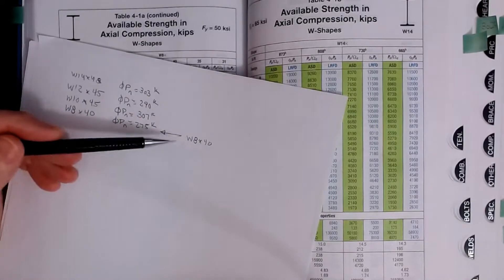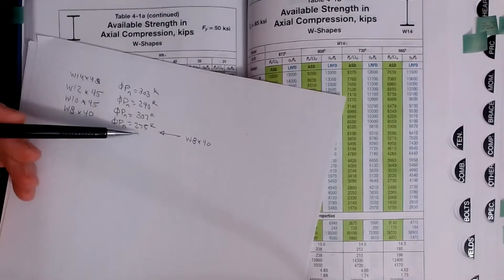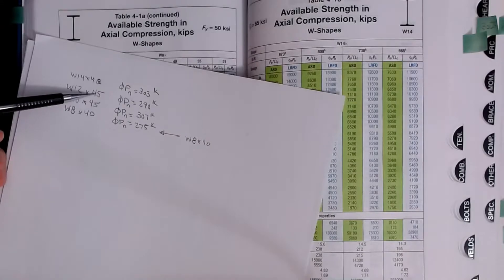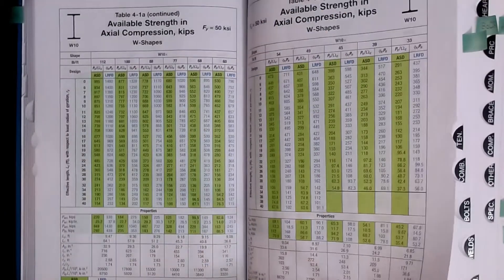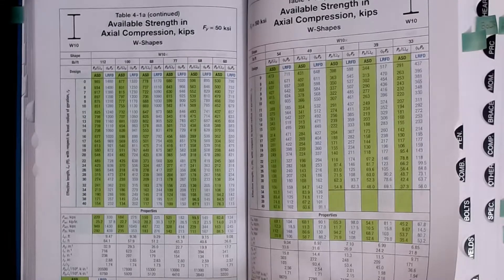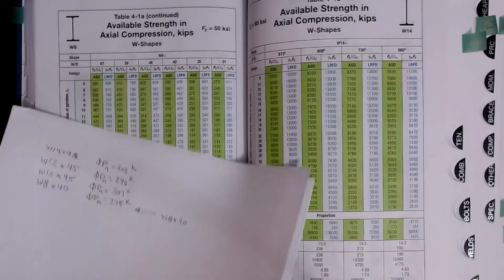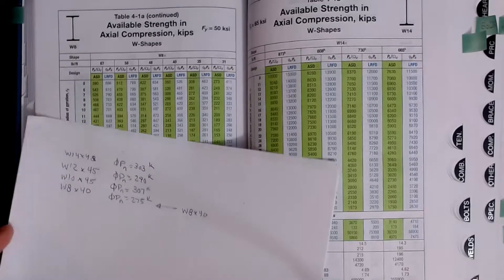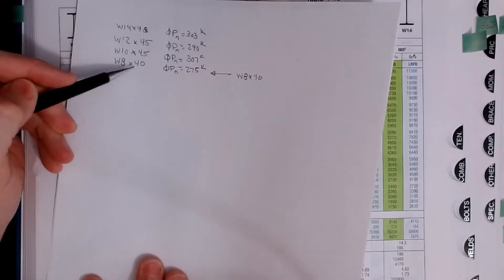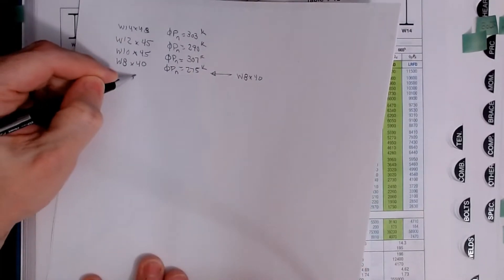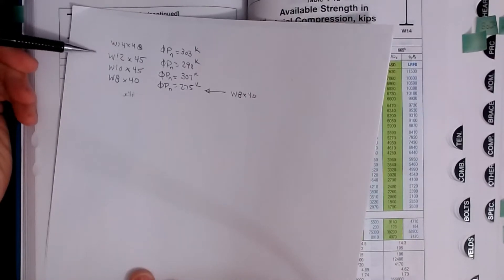So I might argue I don't like being that close to the number. This is engineering judgment and as long as you can justify your decision you're allowed to use a W8 by 40. If it were me I would probably bump up to the next lightest size which would be a W12 by 45. The next size up for an 8 is an 8 by 48 which would be heavier so we're going to leave the 8s and I would jump up then into a W12 or W10.